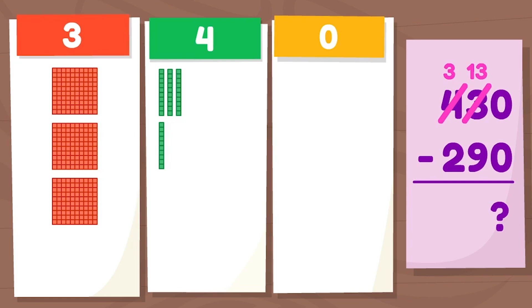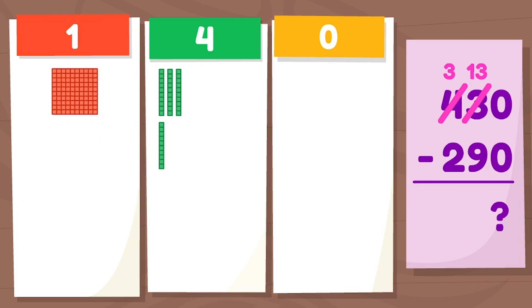Next, let's take away the hundreds. There are two hundreds in 290. How many blocks are left? We have 100 and one, two, three, four... four tens. That means that 430 minus 290 equals 140. Ta-da!